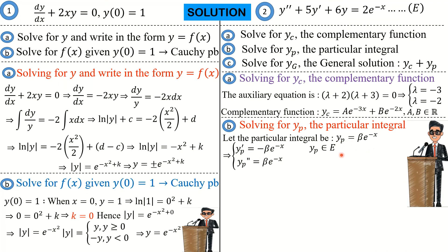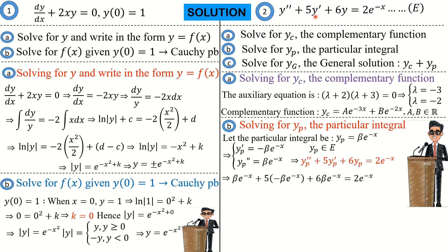Differentiating yp, we get negative beta e raised to the power negative x. Differentiating a second time gives beta e raised to the power negative x. We differentiate because the particular integral must satisfy the differential equation. So we replace y with yp in the differential equation, substituting yp double prime, yp prime, and yp.